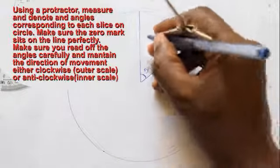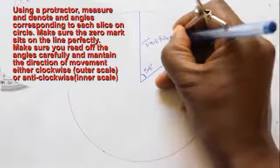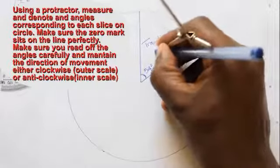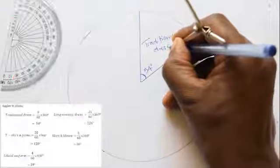If you are measuring in the clockwise direction, use the outer scale on the protractor. And if you measure in the anticlockwise direction, use the inner scale.